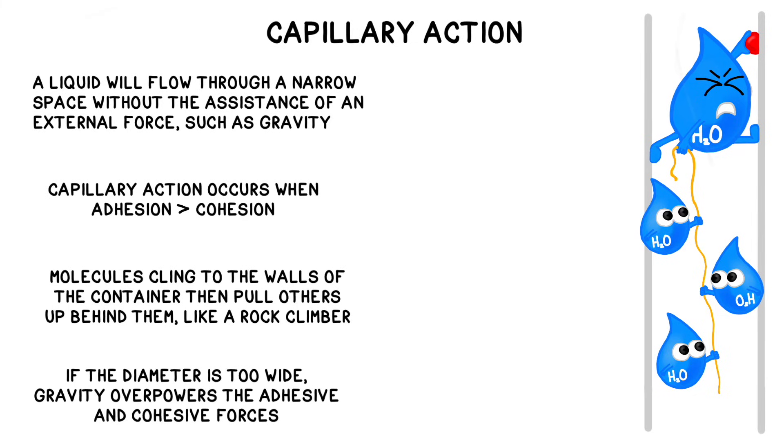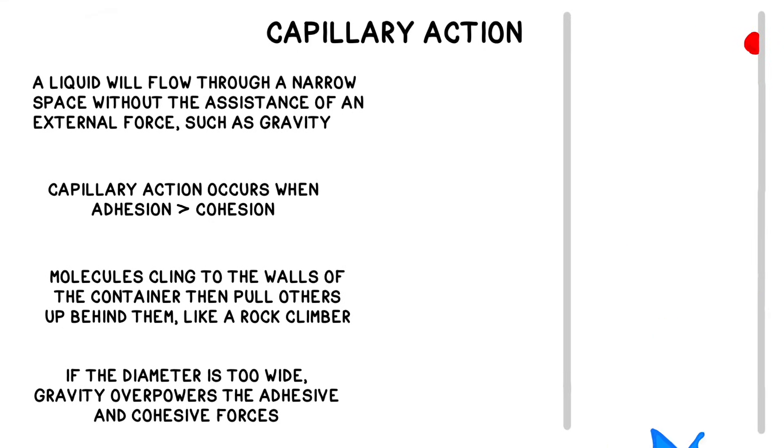If the diameter of the tube is too big, the molecules can't climb the walls and create a flow. Instead, they climb as high as they can before gravity overpowers the adhesive and cohesive forces and stops the liquid moving any higher. This competition between forces results in a dip in the center of the liquid, known as a meniscus.